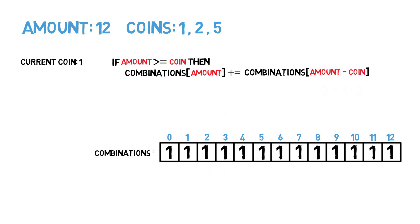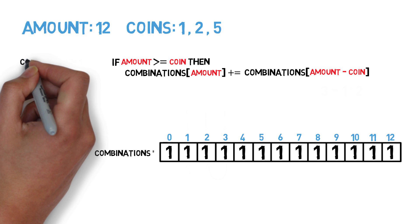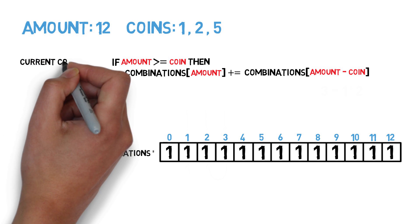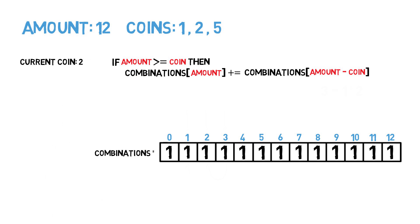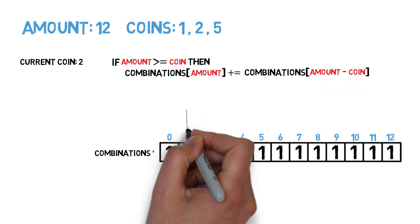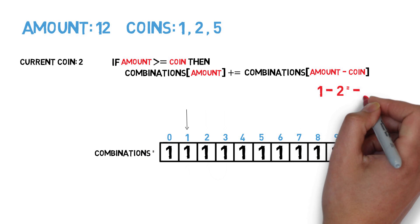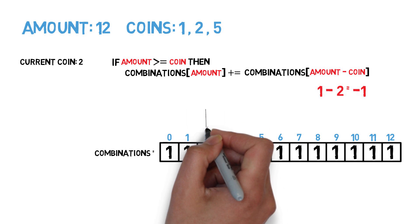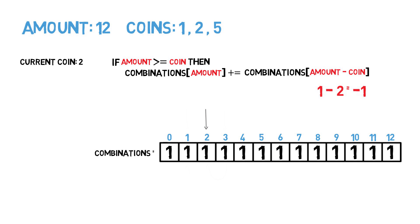Since we are done with coin 1, we move on to coin 2. Starting back at amount 1: is amount 1 greater than or equal to 2? No, so we skip it and move to amount 2. Since 2 equals coin 2, we do 2 minus 2 which gives us 0.